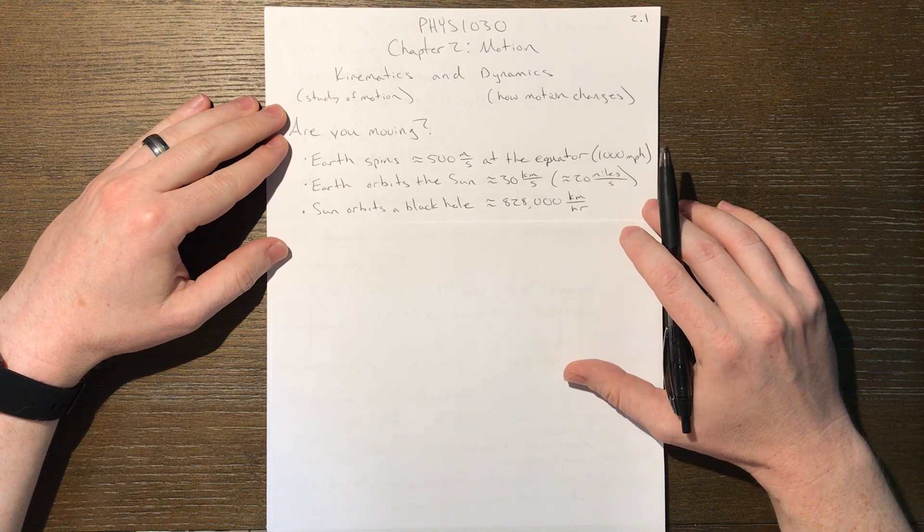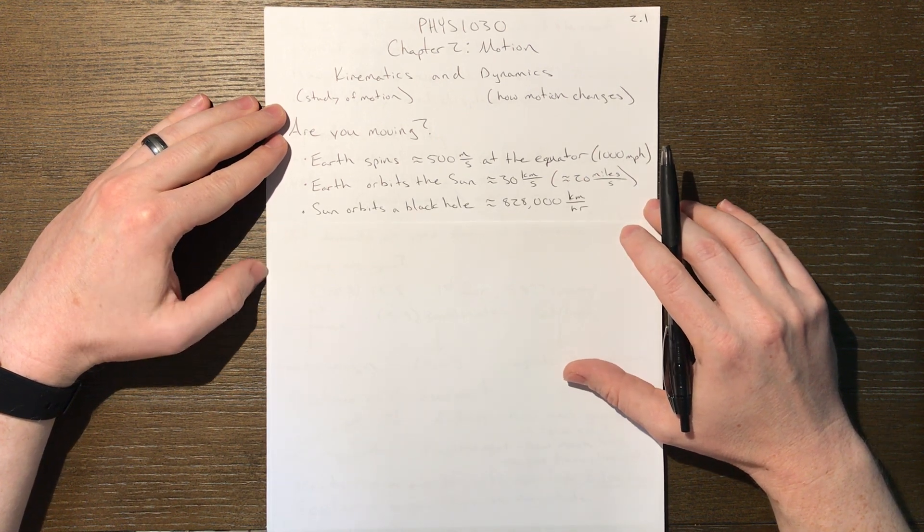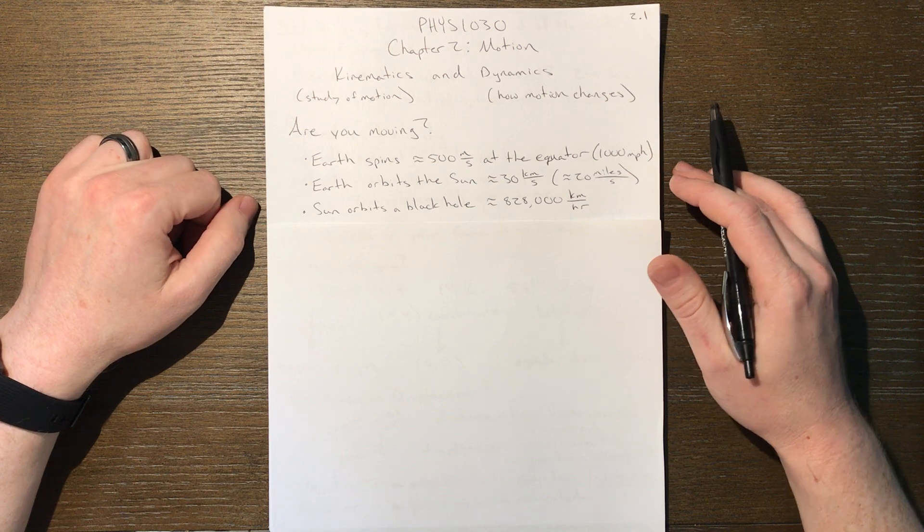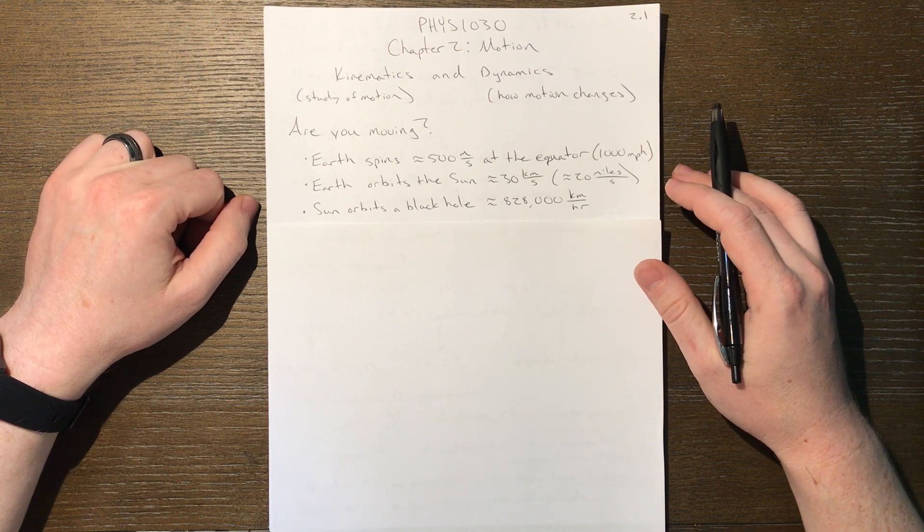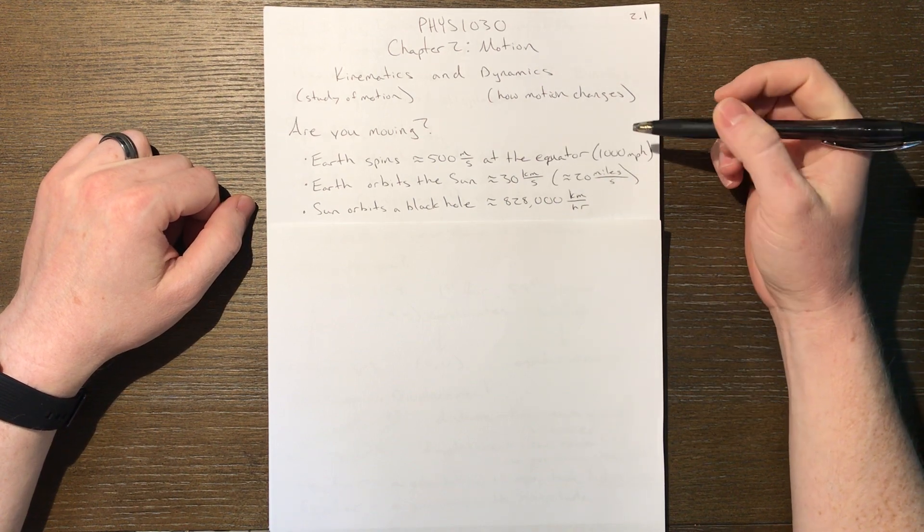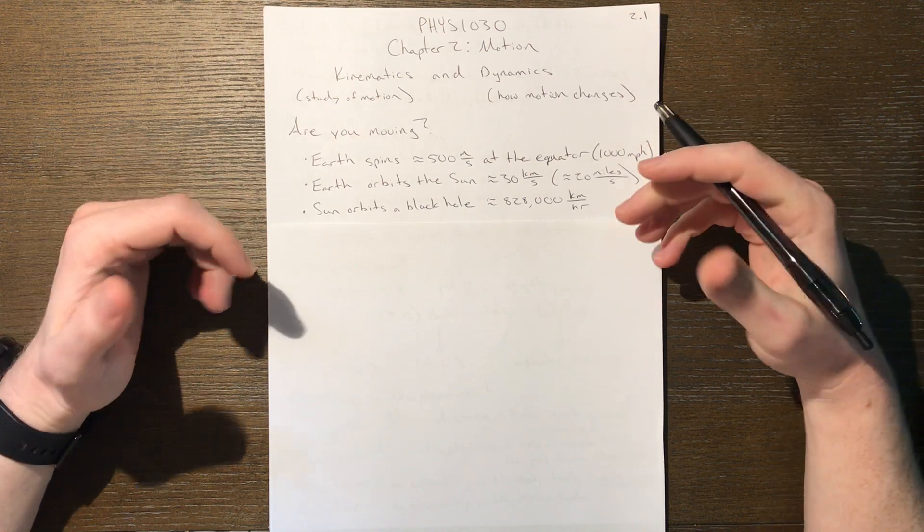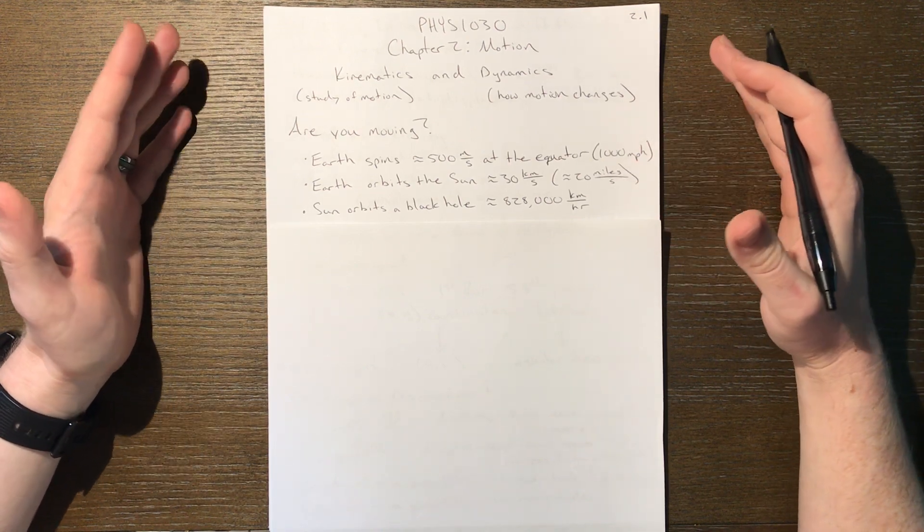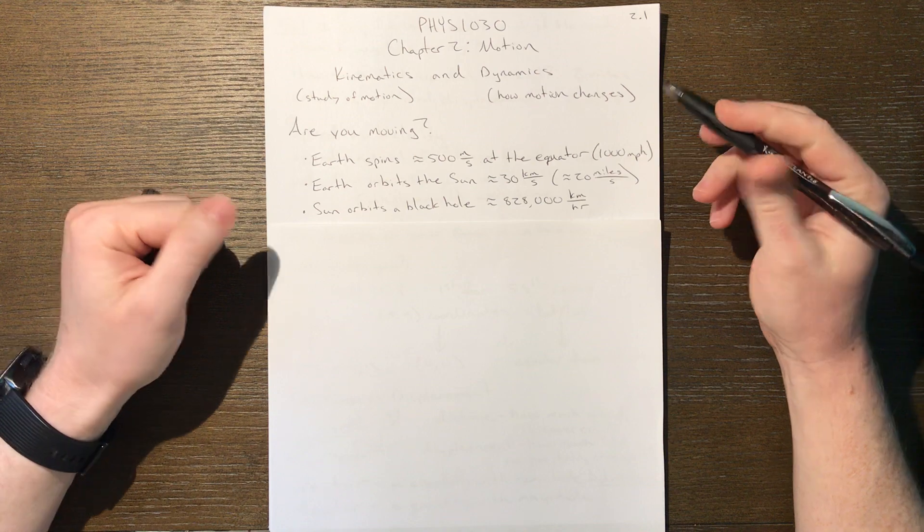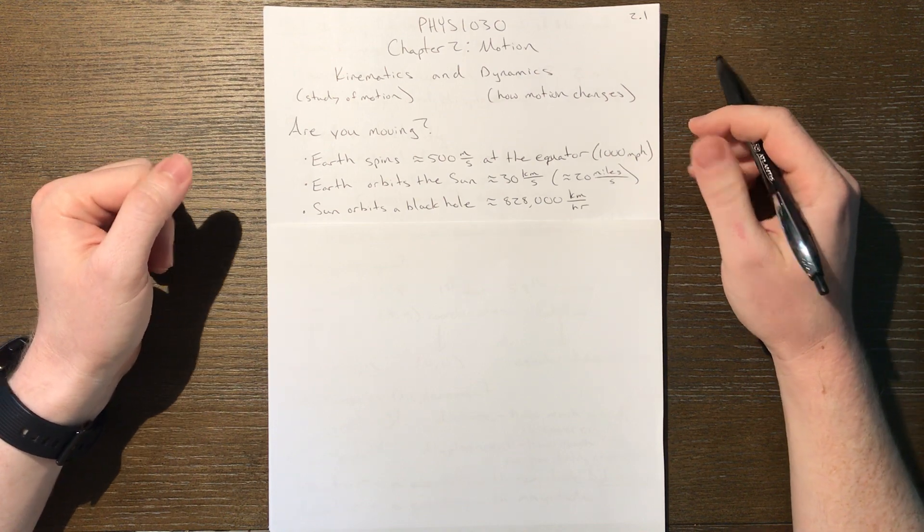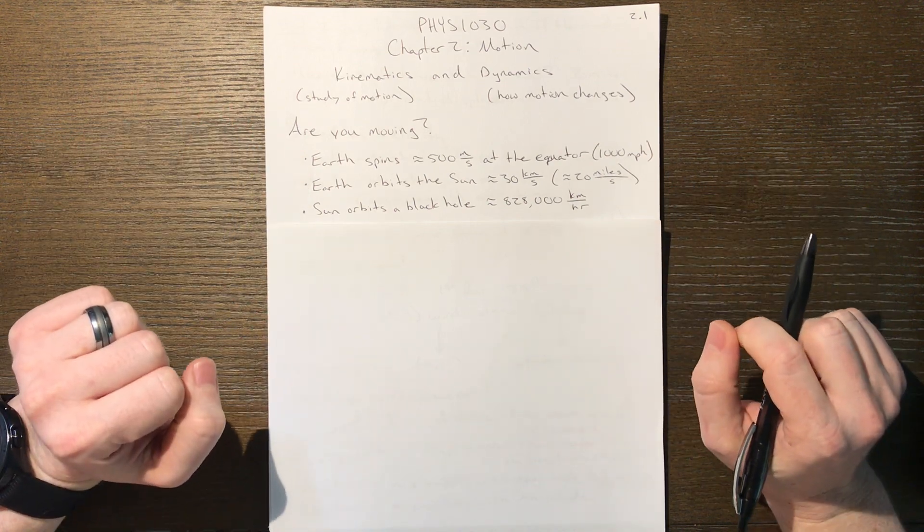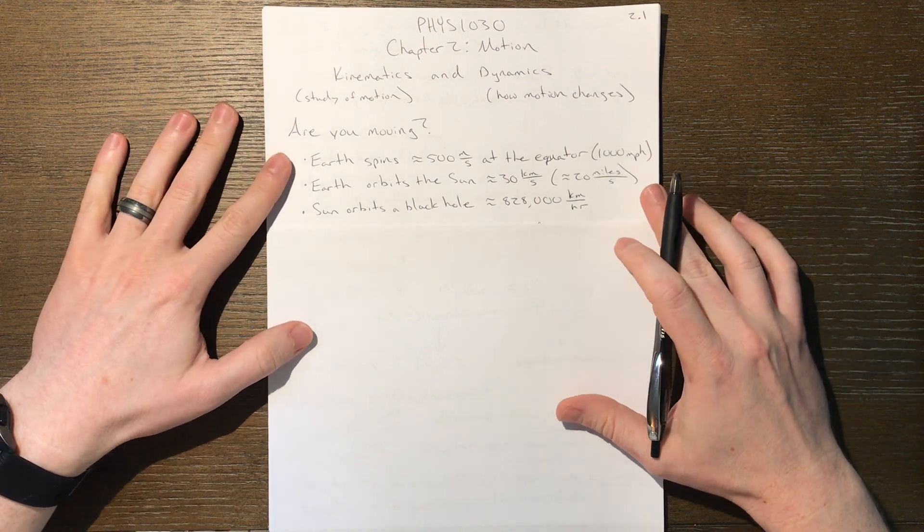It gets even crazier than that, and we could really go on and on. Let me just take it one more step further: the sun, which the Earth is gravitationally bound to, is orbiting the black hole at the center of our galaxy, and that is at a whopping rate of 828,000 kilometers per hour. Now none of these figures are really pertinent to what we're studying other than that they deal with motion. I'm not going to test anyone over these facts - they're fun facts - but the point is you don't necessarily feel this motion, and the point is it's because of your reference frame.